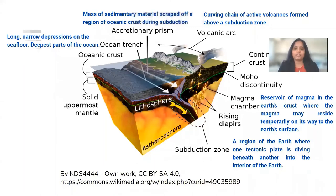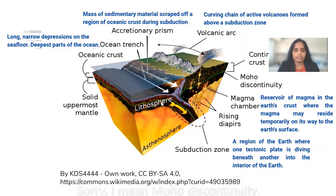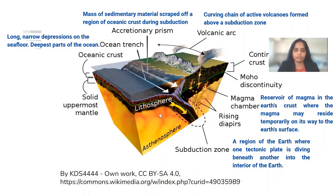So this is a cross section of the earth. As you can see, this is the lithosphere — this is the upper lithosphere, this is the lower lithosphere. And in between there is a discontinuity, which is the Conrad discontinuity. Then there is the asthenosphere.